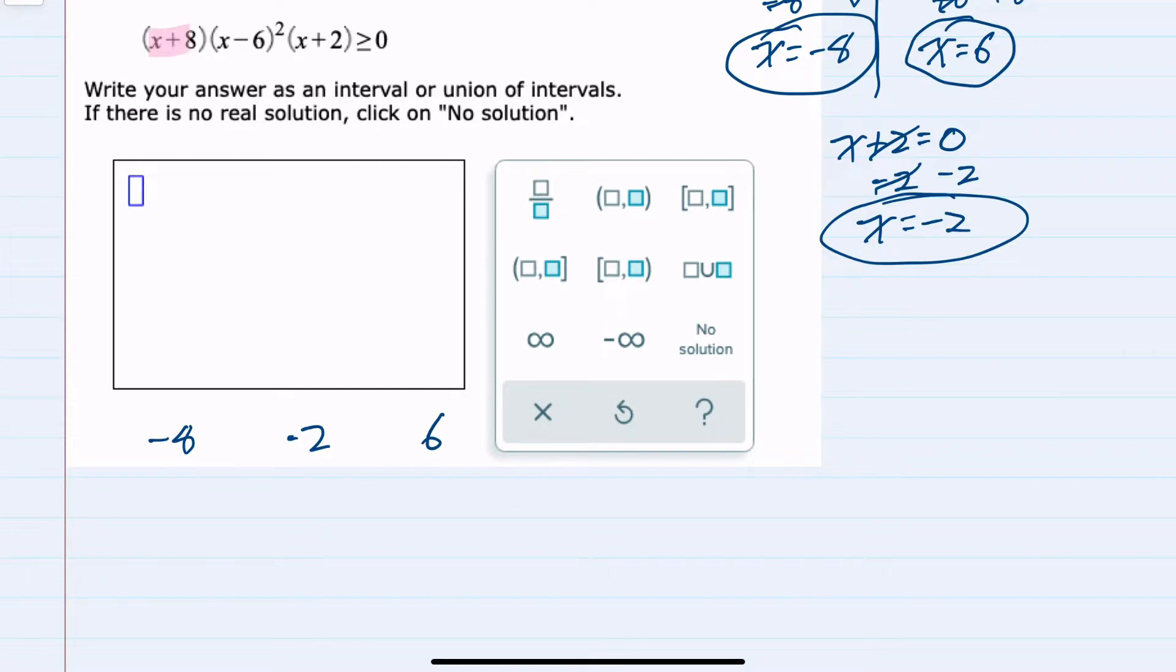And then I'm going to take each of these terms, starting with x plus 8, and use this table to indicate where x plus 8 is positive or negative. If I plug any value in for x that's greater than negative 8, this would be positive. Less than negative 8, it would be negative.